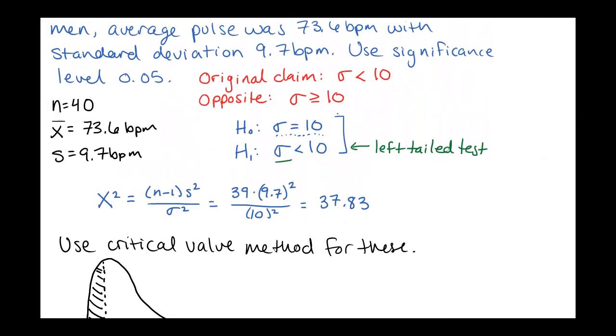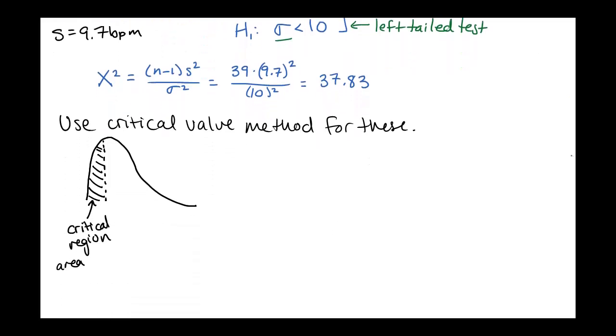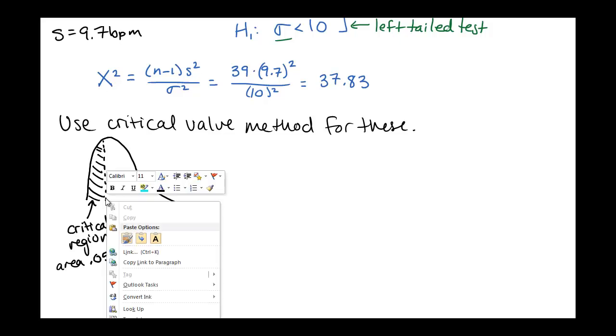So for this problem, we were using a significance level of 0.05. So this would have area 0.05. And you'll notice that this is area to the left of our critical value. So here's our critical value. This is some kind of chi-squared value.